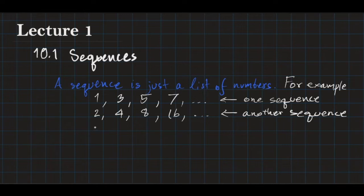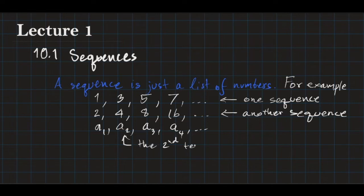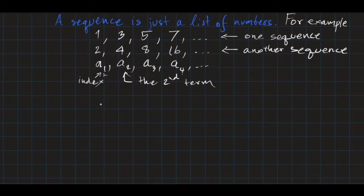As you can see, a sequence is going to have numbers. The first number I call A1, the second A2, the third A3, A4, and so on. These numbers are called terms. For example, the second number is called the second term, this is the third term, and the fourth term, and so on. The subscript here is called the index. This is what a sequence is.